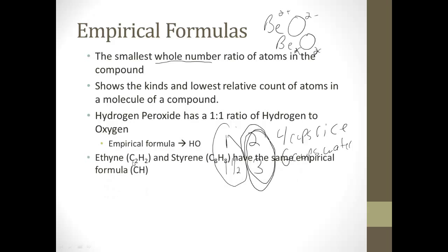A couple of examples. Ethine, which is C2H2, the smallest whole number ratio would just be CH. Styrene, C8H8, if I reduce this, it's going to be CH. If I reduce C2H2, it's going to be CH. So frequently you'll have an empirical formula. There's many different molecular formulas that kind of go along with it.